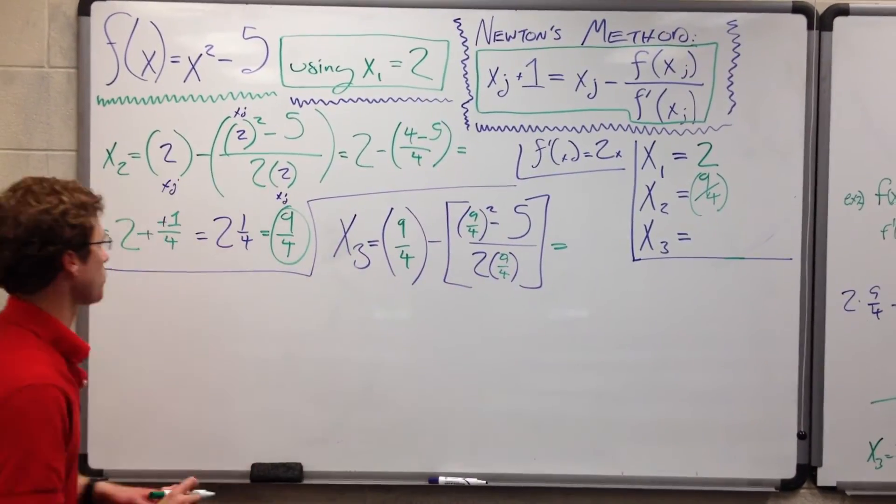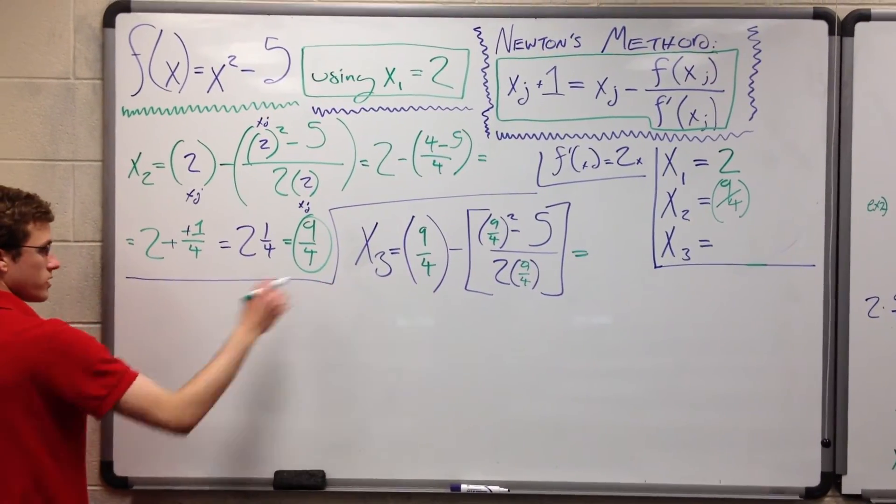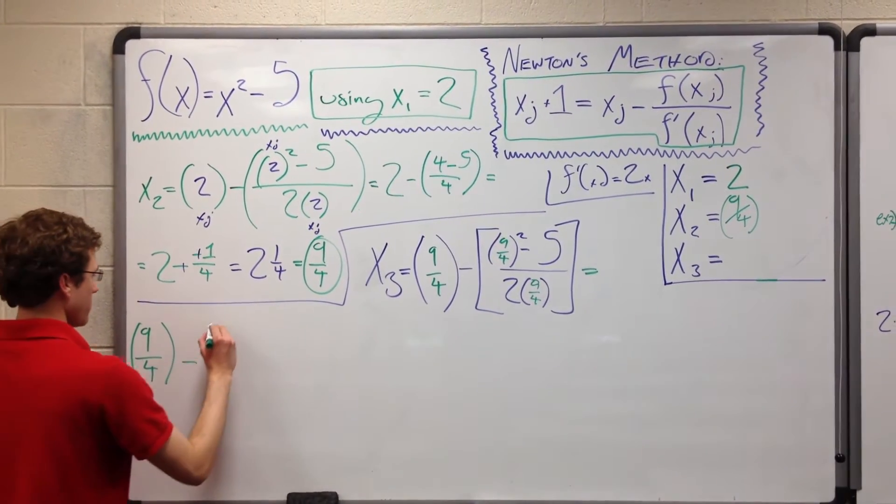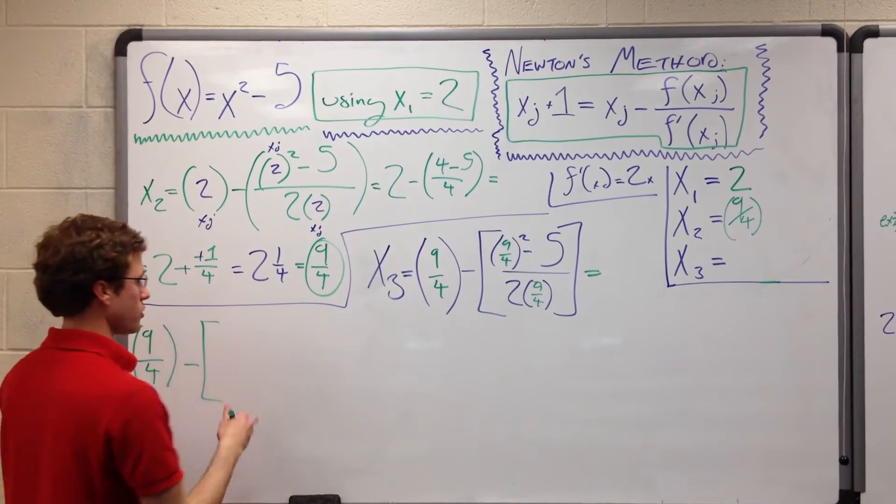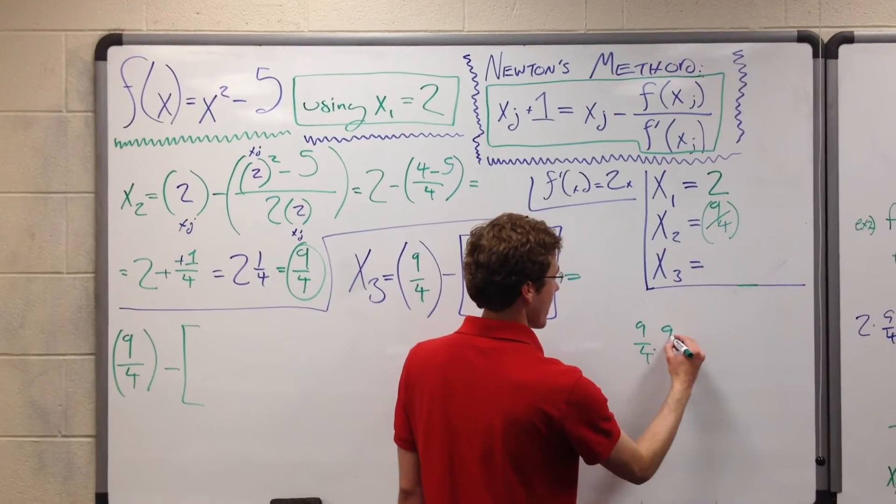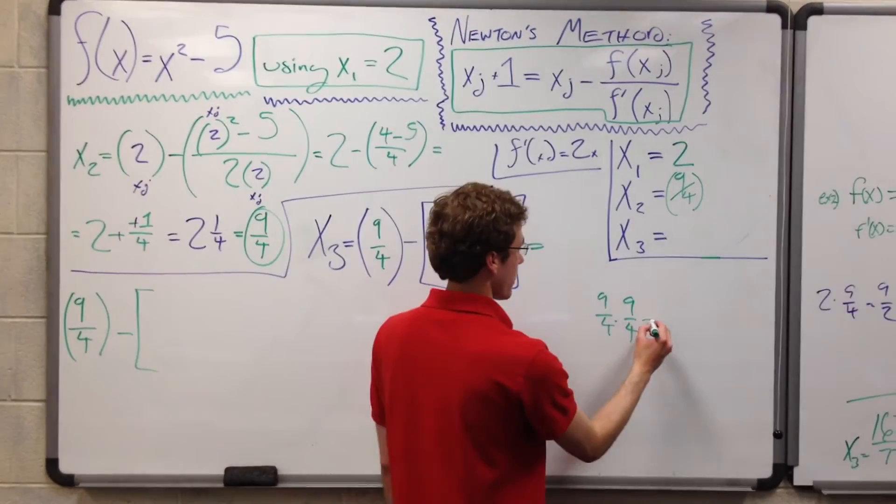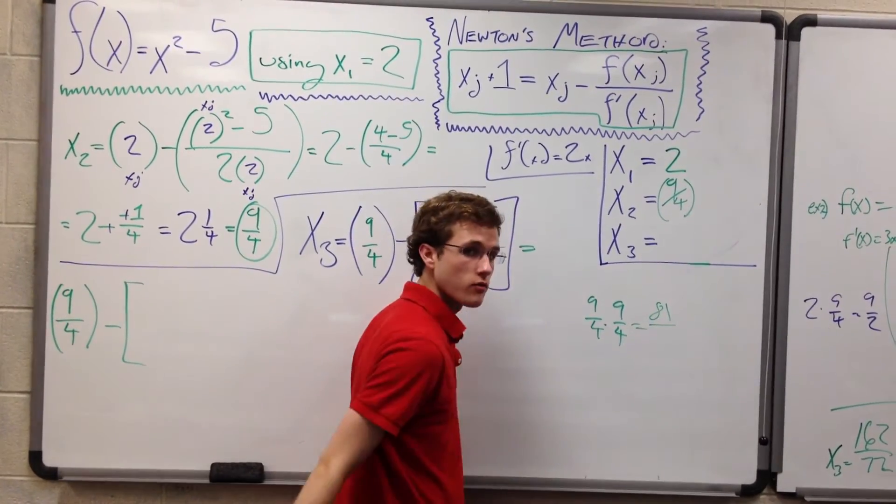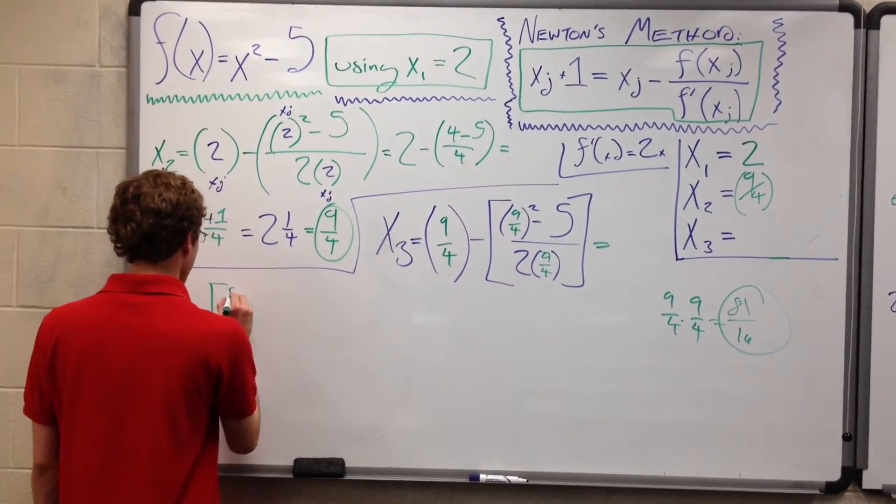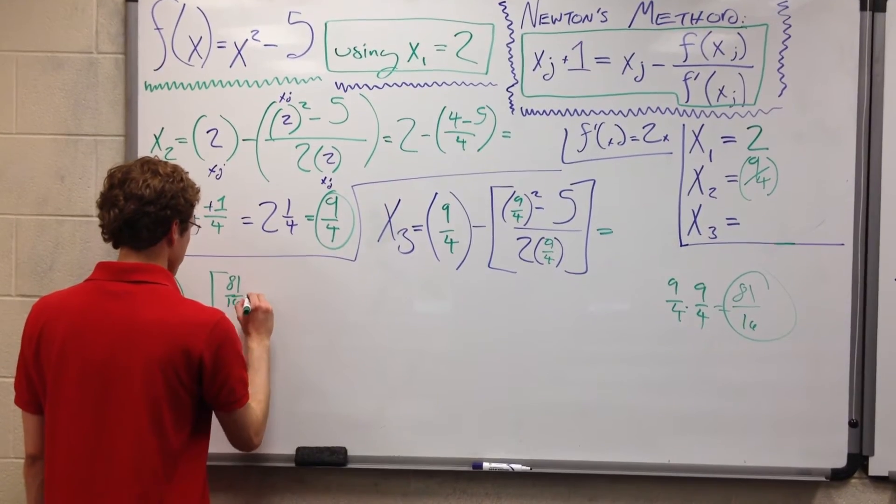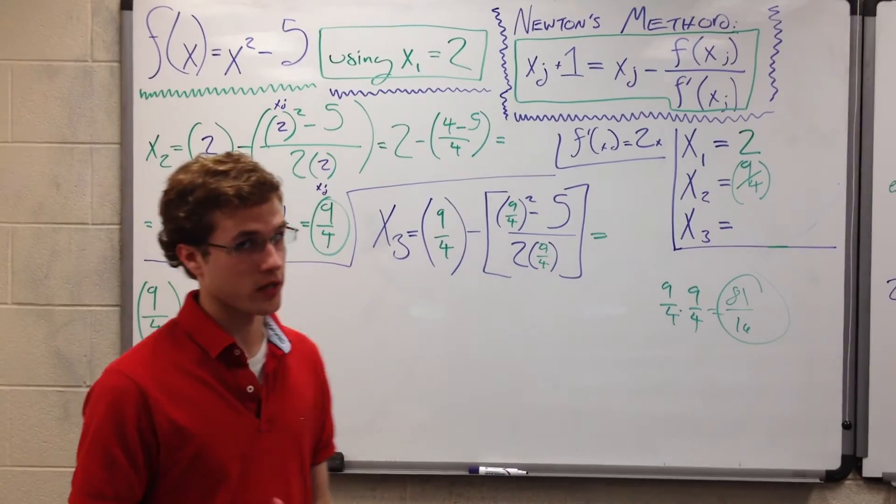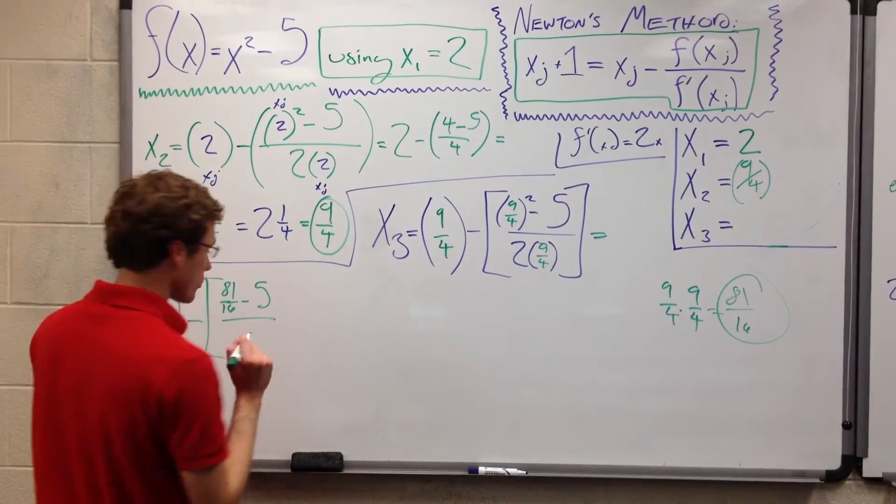We've put 9/4 in each of those spots. Let's see what this equals. We're continuing working on our x₃. We have 9/4 minus, let's clean up some of this. (9/4)² is just 9/4 × 9/4, right? So 9 × 9 = 81, 4 × 4 = 16, so 81/16 - 5. And then on the bottom, 2 × 9/4, which we can simply rewrite as 9/2.